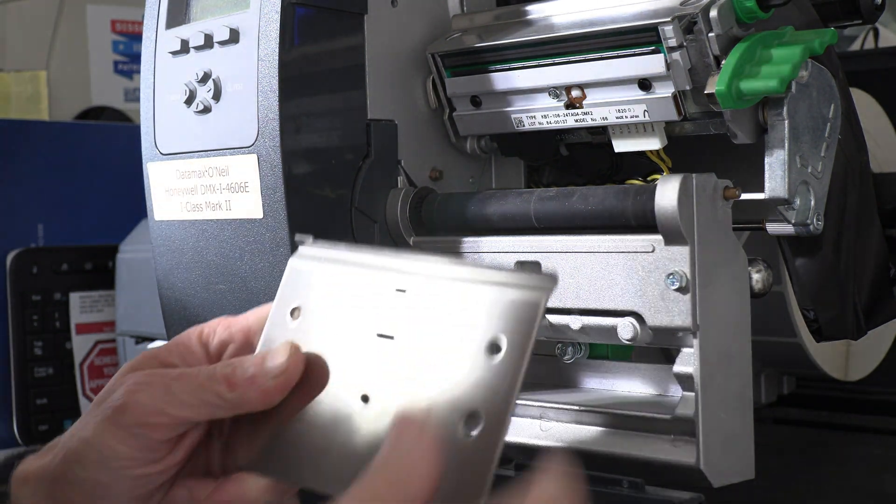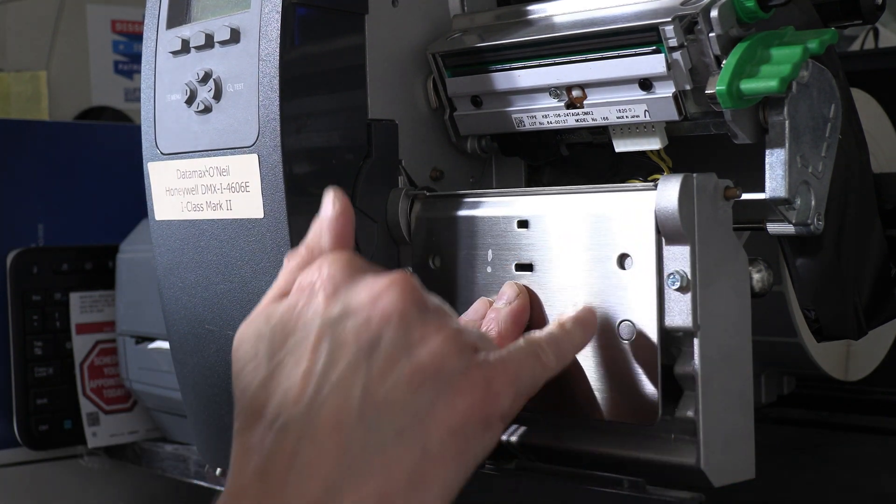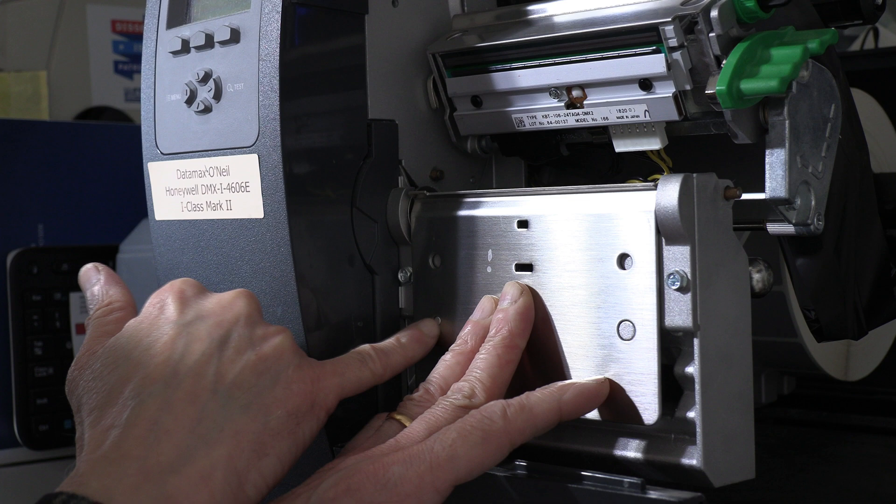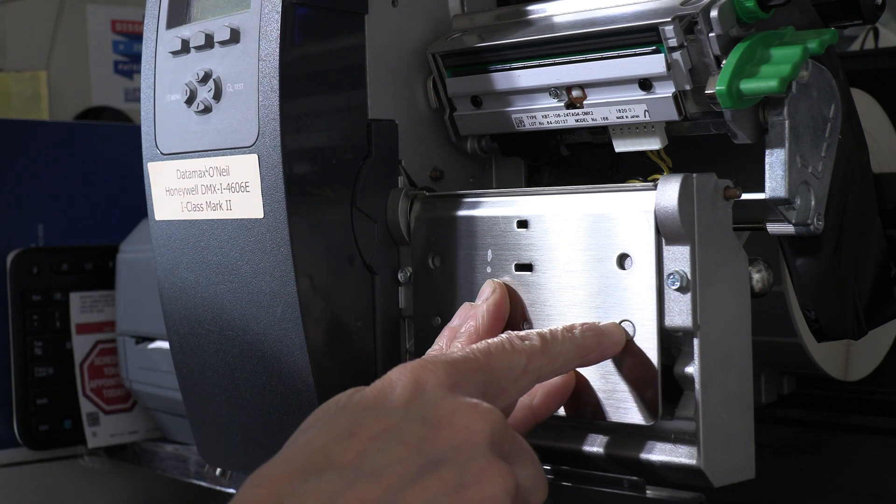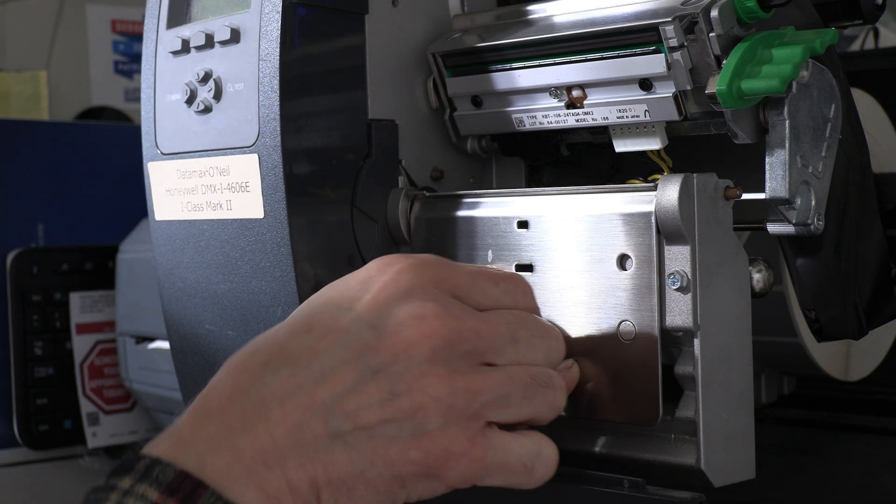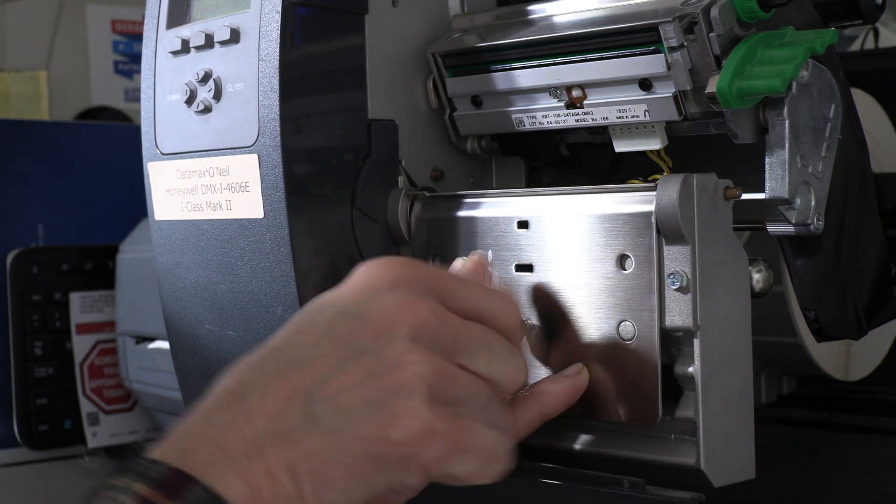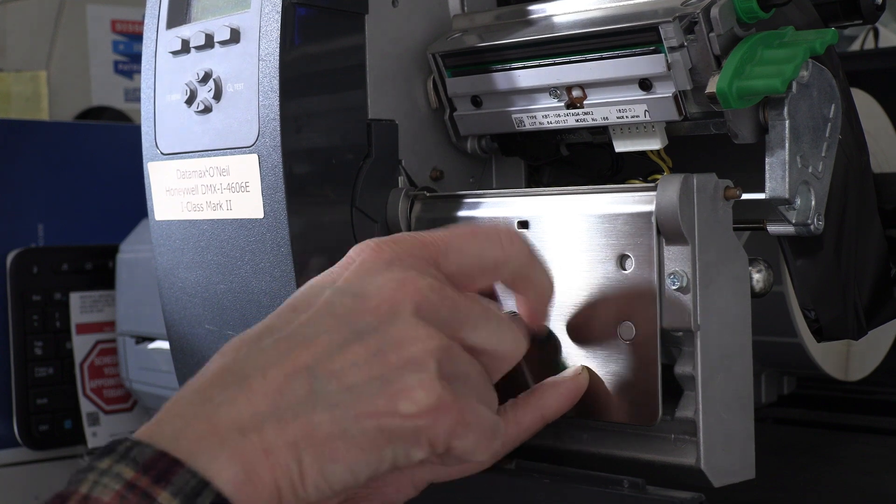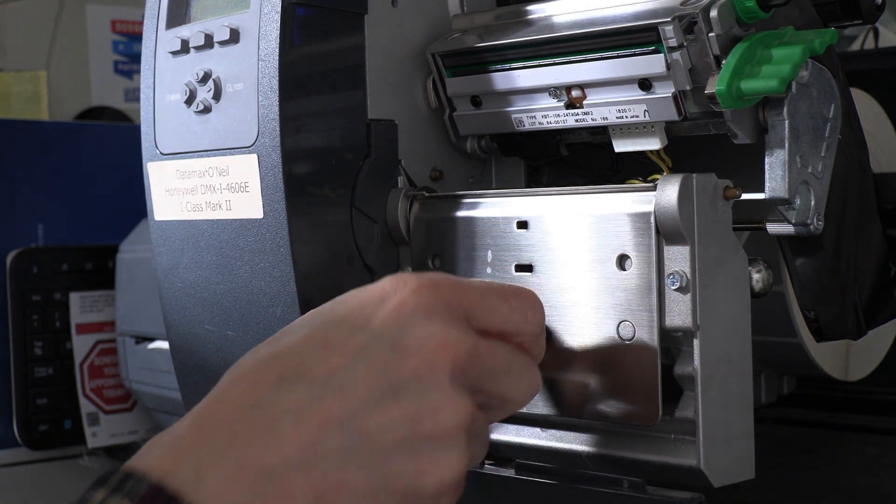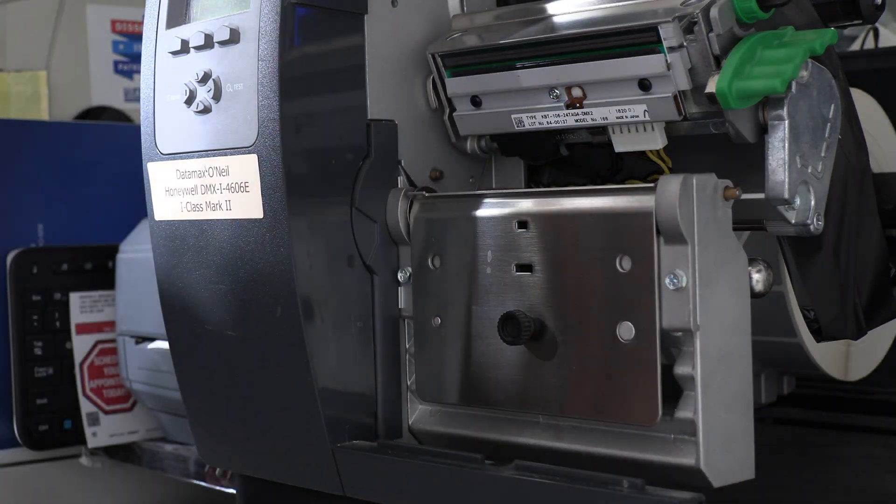And then you grab this knob, you put it in here, put it in there. Make sure this hole matches that little notch and this one matches this notch. Basically it's seated properly. And you close this. Make sure you close it tight, make sure it's not loose and everything looks good.